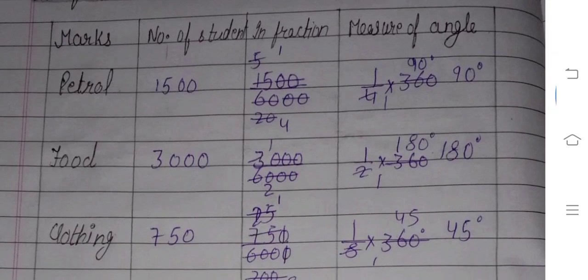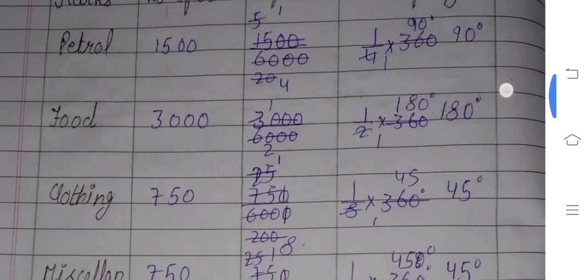We will find the measure of angle. We will take 1 by 4 and multiply by 360 degrees, then we will get 90 degrees. Same as we multiply 1 by 2 by 360 degrees, then we get 180 degrees.